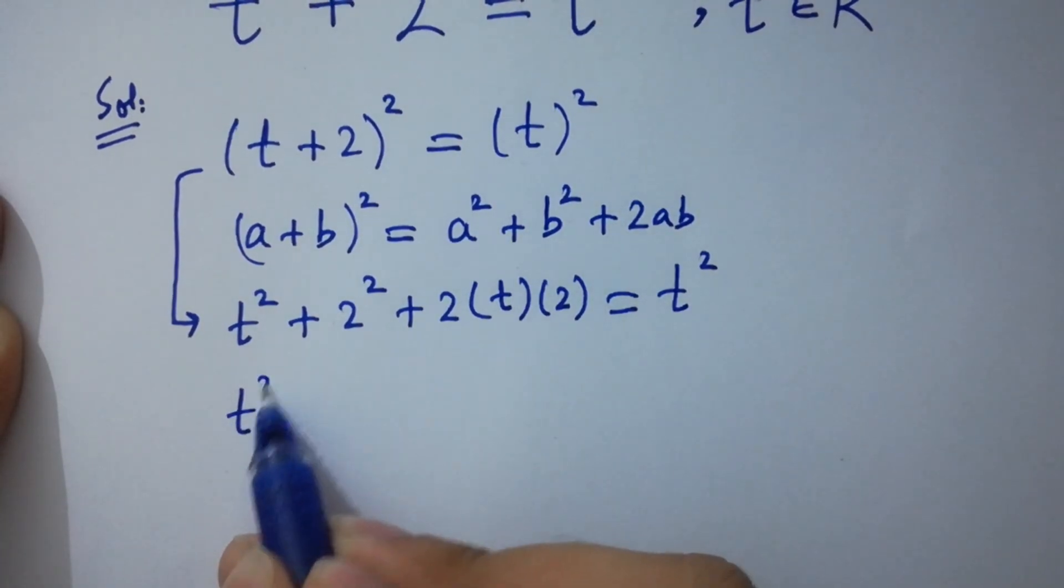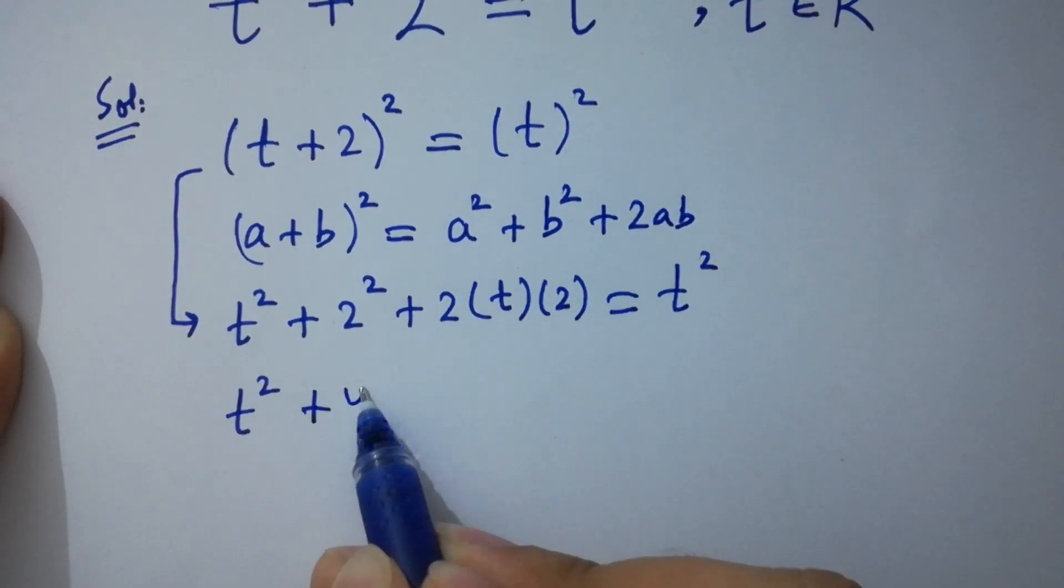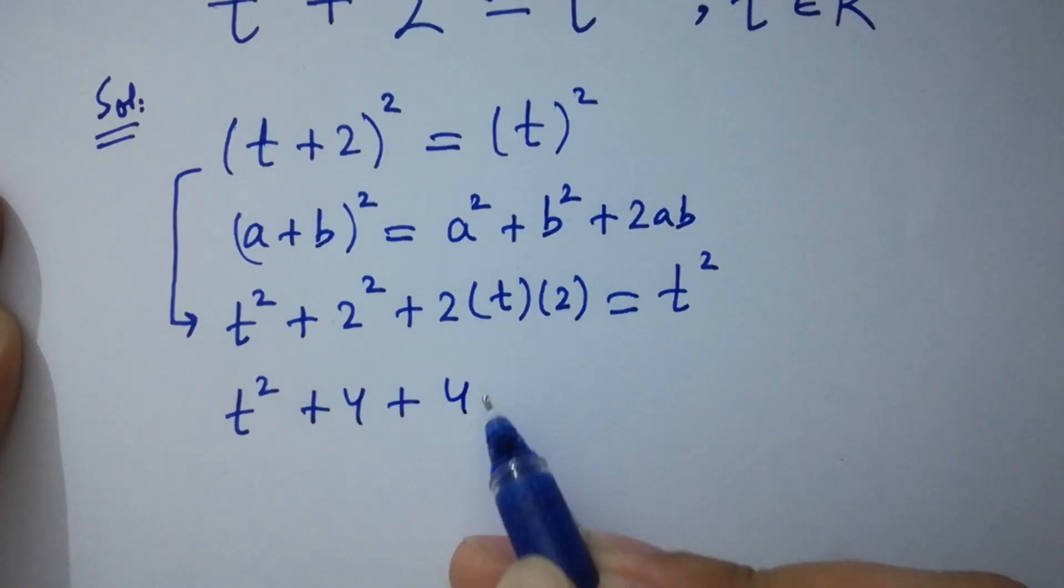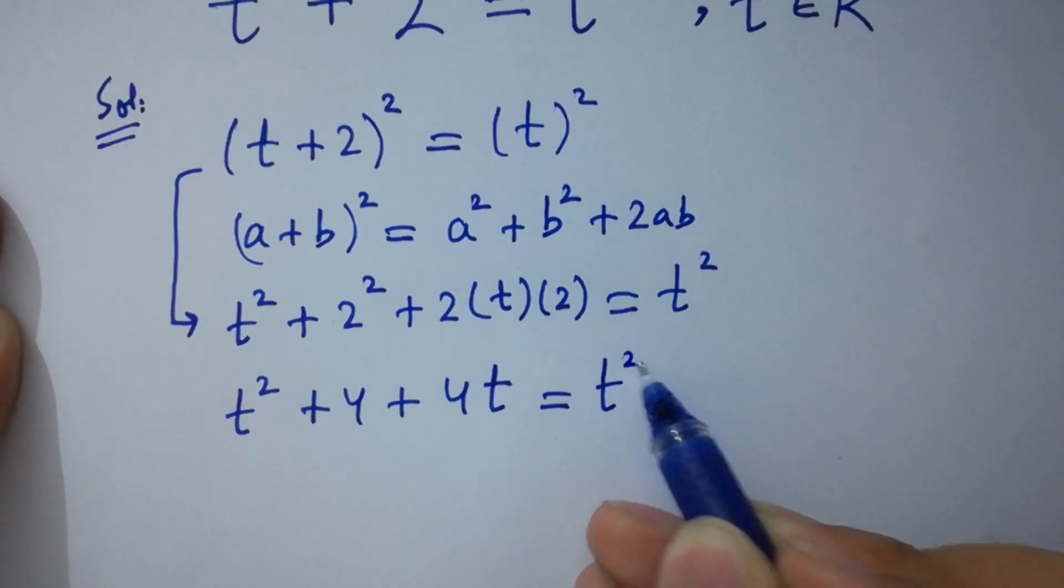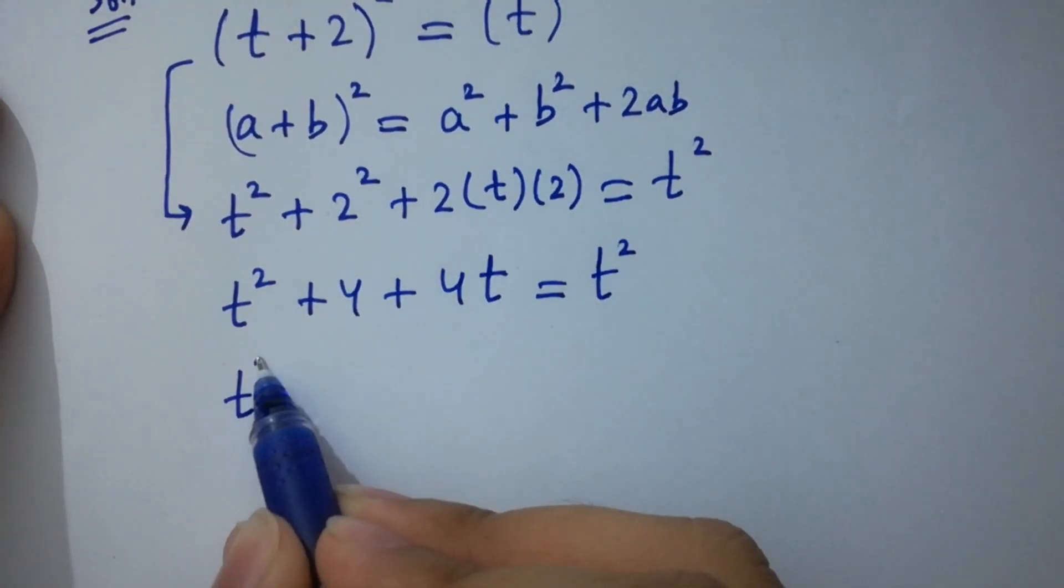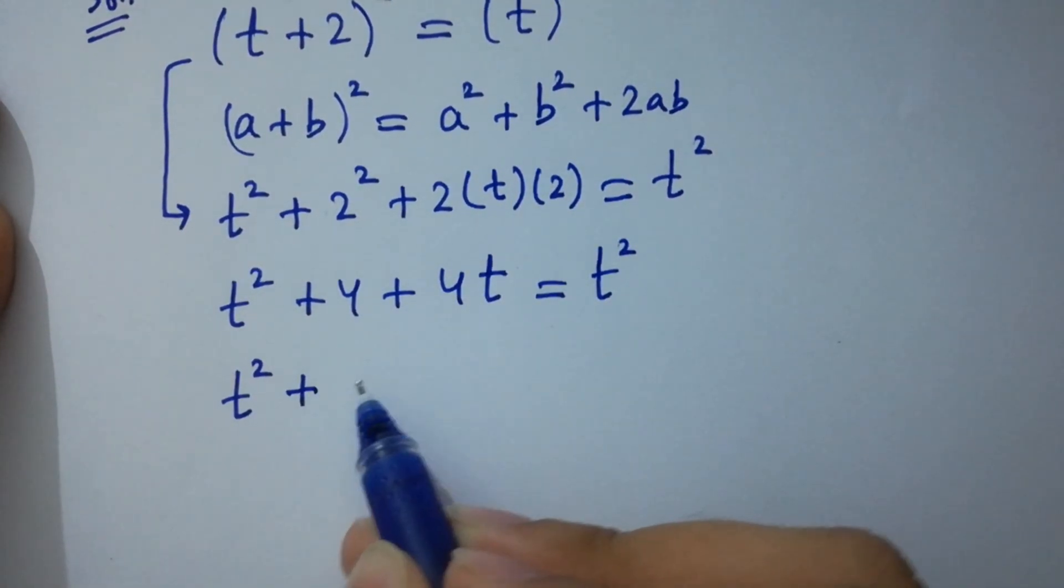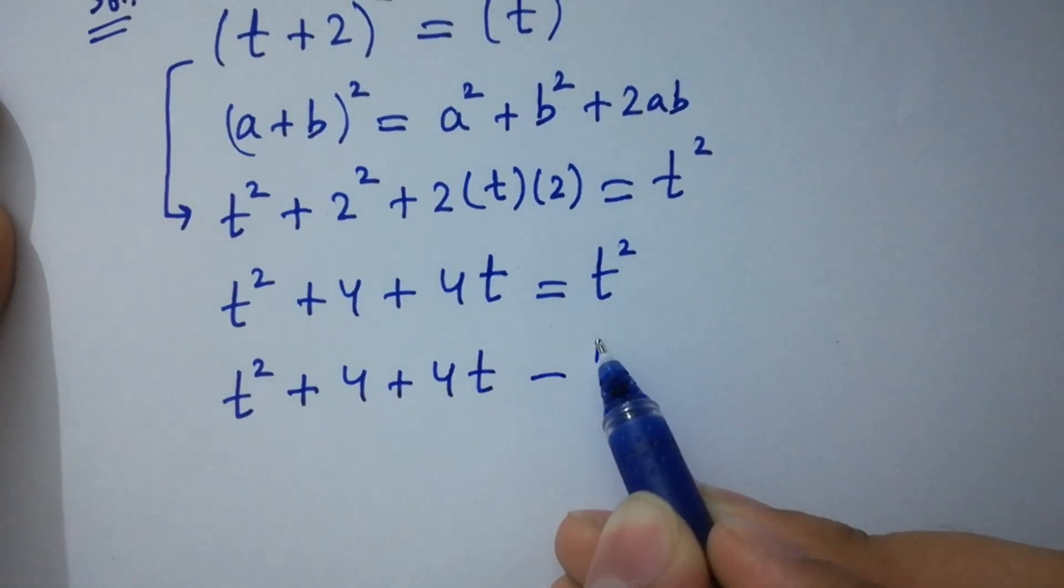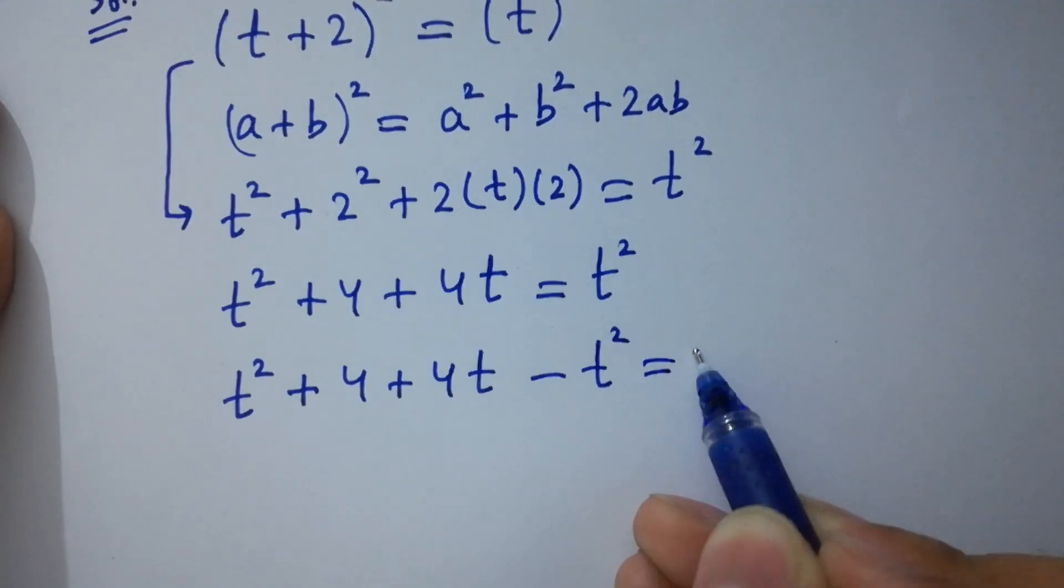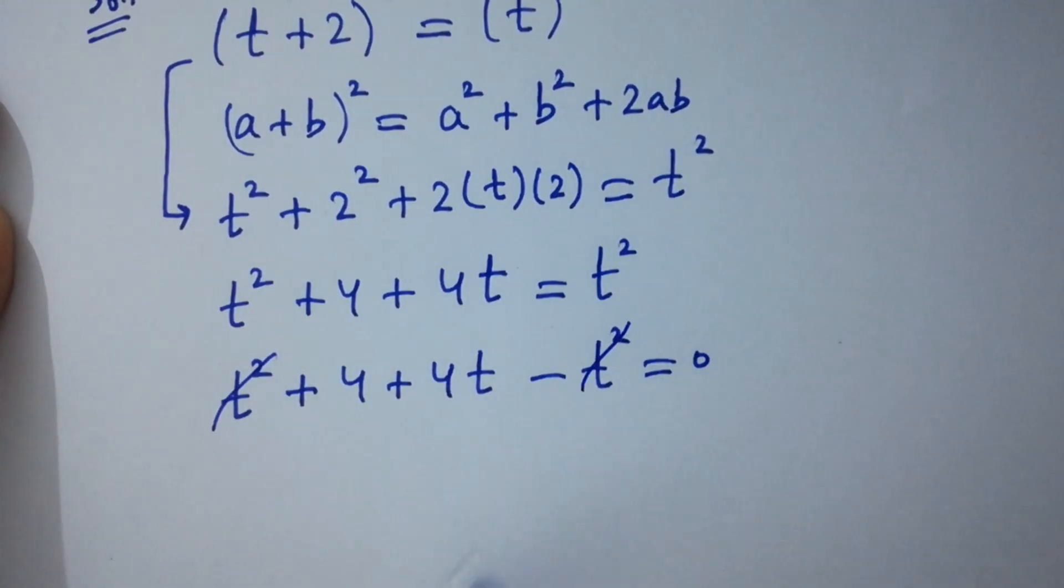t square plus 4 plus 4t equal to t square. t square plus 4 plus 4t minus t square equal to 0. t square and t square cancels.